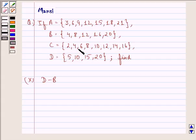C equals the set {2, 4, 6, 8, 10, 12, 14, 16}, and D equals the set {5, 10, 15, 20}, then find D minus B.